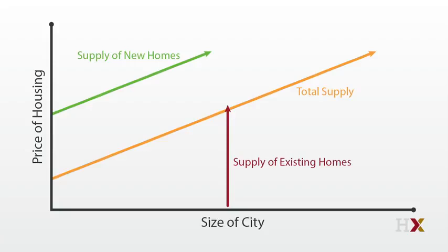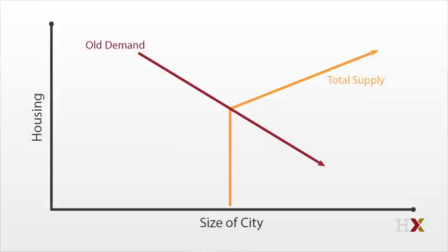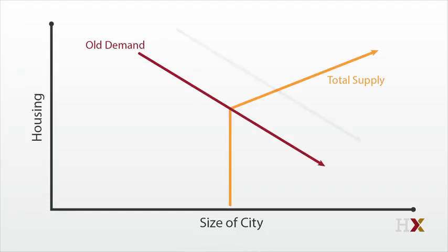Now let's see what happens when demand shifts. Let's assume that the basic demand curve is a downward sloping line that runs through the kink point. That intersection would explain why the city starts 2018 with exactly 1 million homes. Now, let's assume that demand shifts upward — perhaps because of an increase in the productivity or amenities of the city. Demand moves up, and quantity and prices both go up. As before, price moves more if new supply is inelastic, and quantity moves more if new supply is elastic.